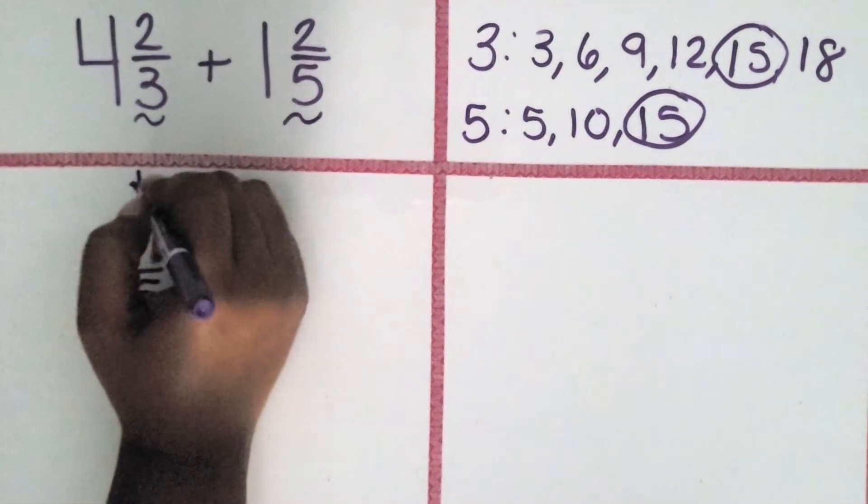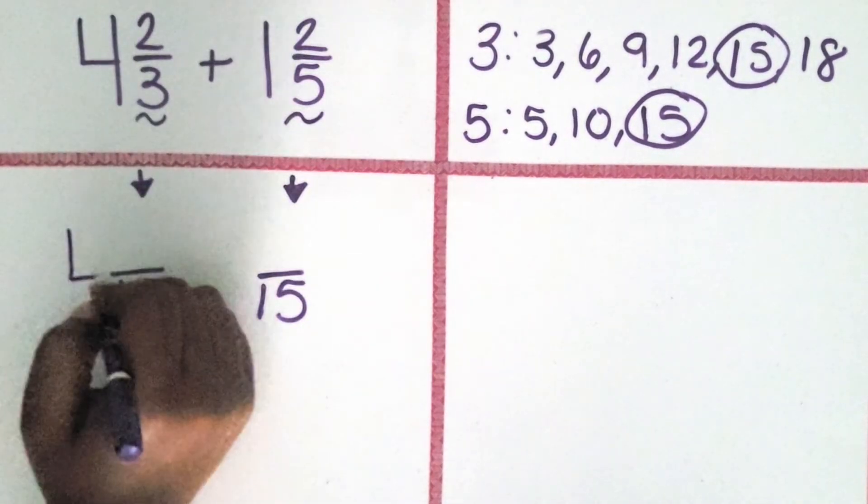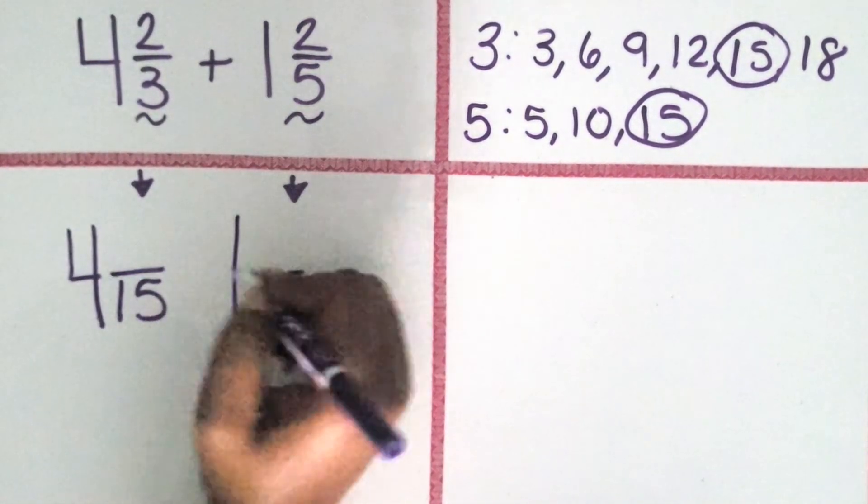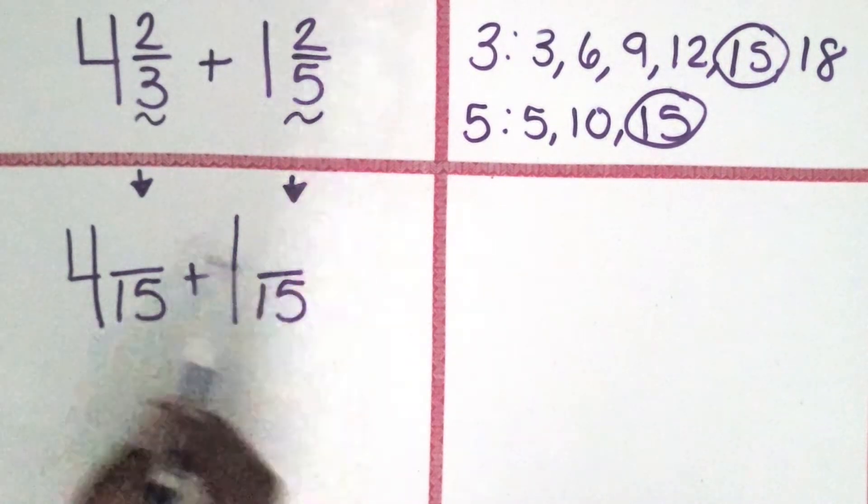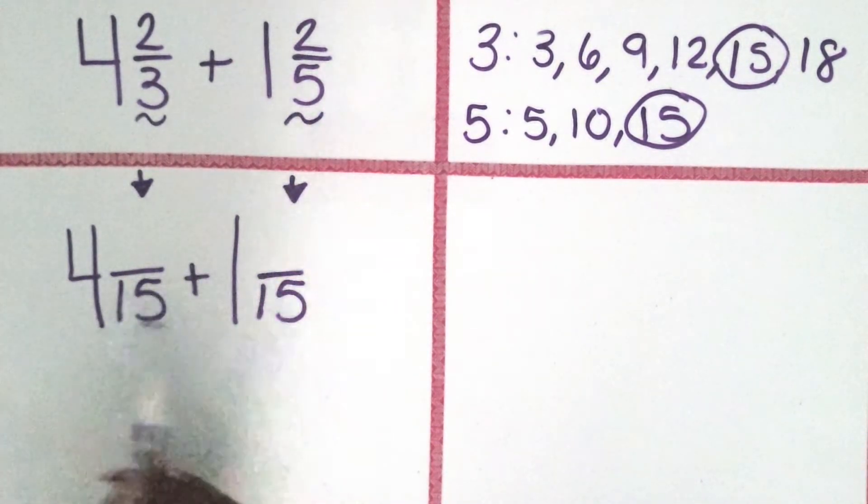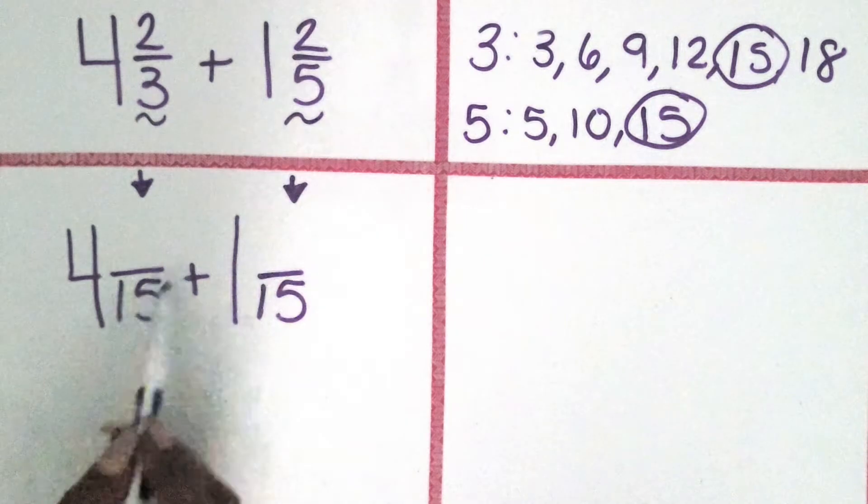Since we are adjusting or renaming only the fraction parts of the mixed numbers, we can bring down the whole numbers. Now we have equivalent fractions with like denominators, but we still need to figure out what those numerators are.